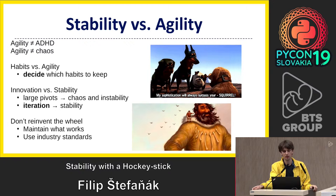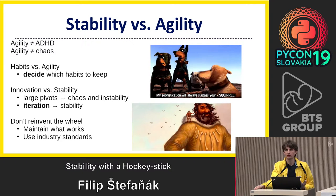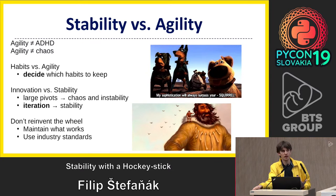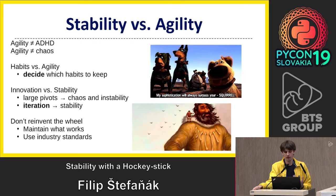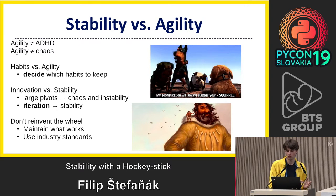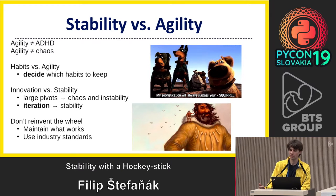Another commonly misunderstood thing is the relationship between stability and agility. If you look at it properly, agility is definitely not chaos — it should not be. In agile teams you are free to decide which habits you want to keep. In agile teams you should innovate using iterations. If you use very large pivots or change your direction every few weeks, you're probably doing it wrong. But if you use iteration and build on the shoulders of giants — actually using things you've implemented previously — then you can slowly iterate towards a very stable system and a very stable organization.